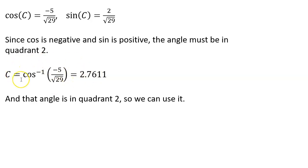Remember, cosine inverse will give me an angle between 0 and pi. So it will give me an angle either in quadrant 1 or quadrant 2. I got quadrant 2 this time. So this angle is going to work for me.